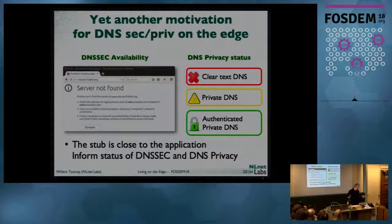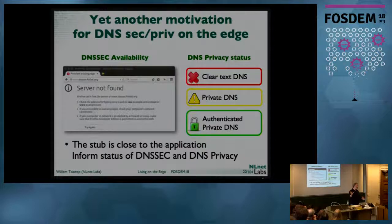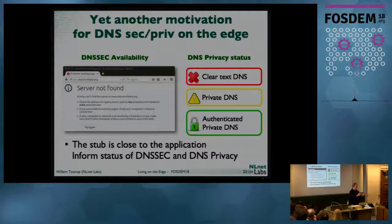Another motivation for having a versatile stub close to the application and end user is that when DNSSEC at a recursive resolver fails, it tells the user by simply not answering — the user doesn't know why it didn't work. With the library, the browser could say 'this seems like a genuinely spoofed answer, you should probably not connect,' or 'the signature is expired — do you want to continue or not?' The same applies to DNS privacy — it could indicate what level of privacy you have with your DNS queries.